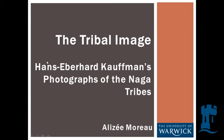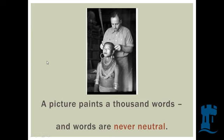The title of my presentation is 'The Tribal Image: Hans Eberhard Kaufmann's Photographs of the Naga Tribes.' I'm going to start with a very commonsensical saying: a picture paints a thousand words. But what we don't actually think about is that we tend to be suspicious of words and aware of how unreliable and biased texts can be, whether they be newspaper articles and so on — and that's why we cross-reference as undergraduates. We tend not to be as critical of pictures and photographs, and this is one thing I'd like you to think about as we go through this presentation.